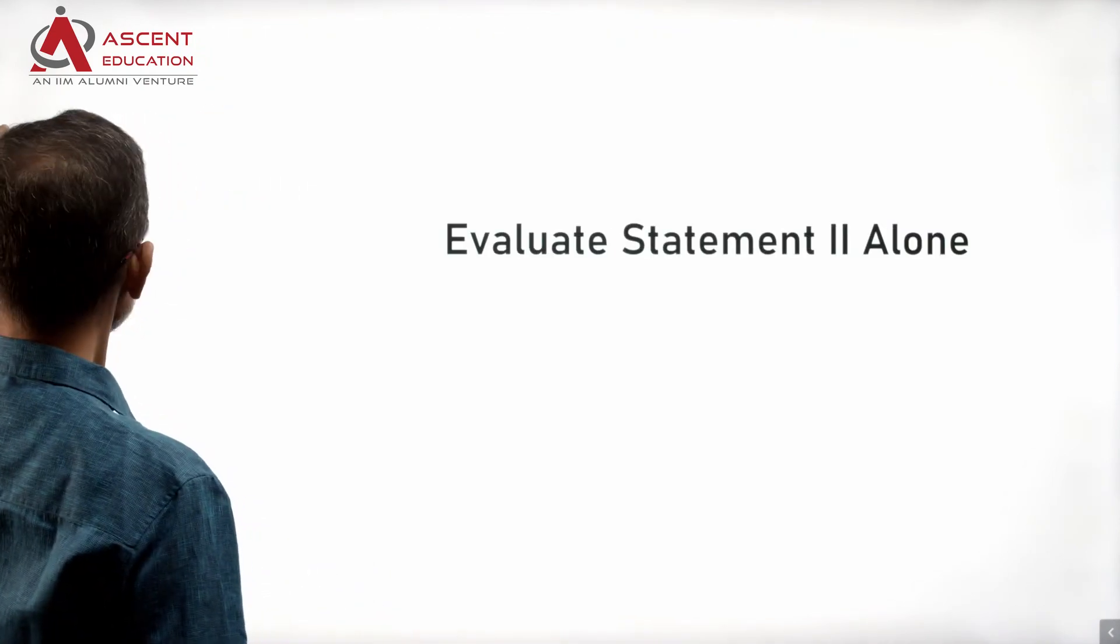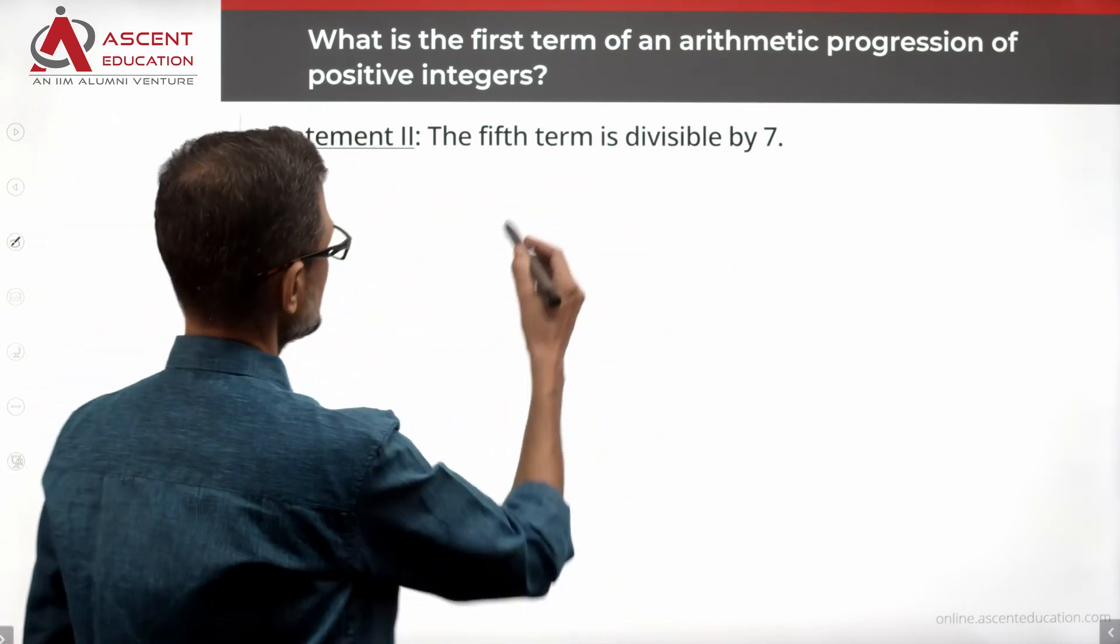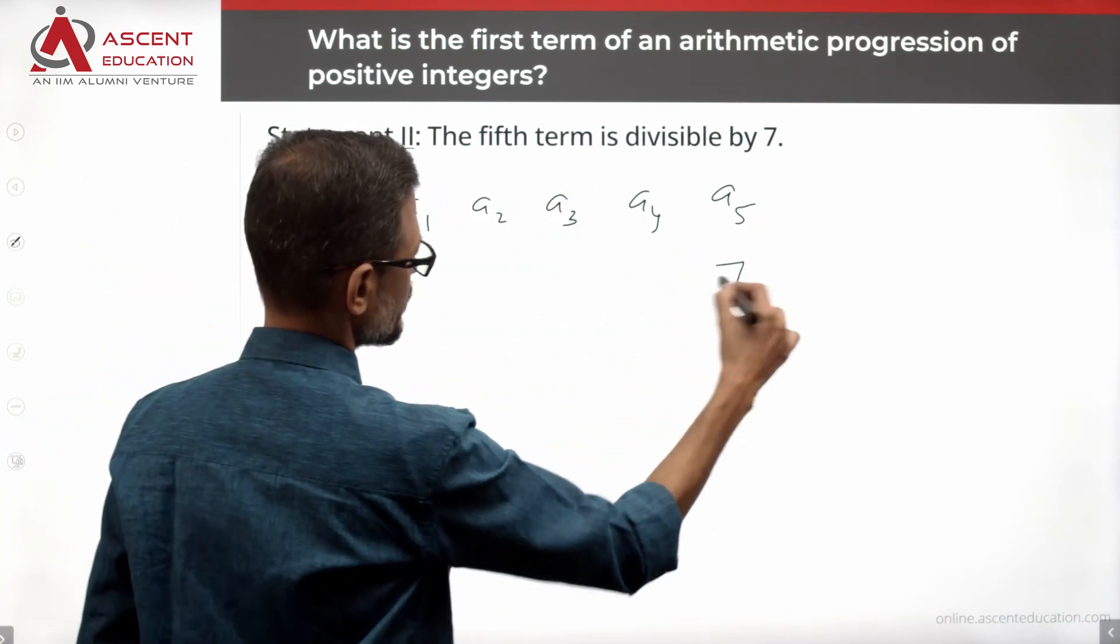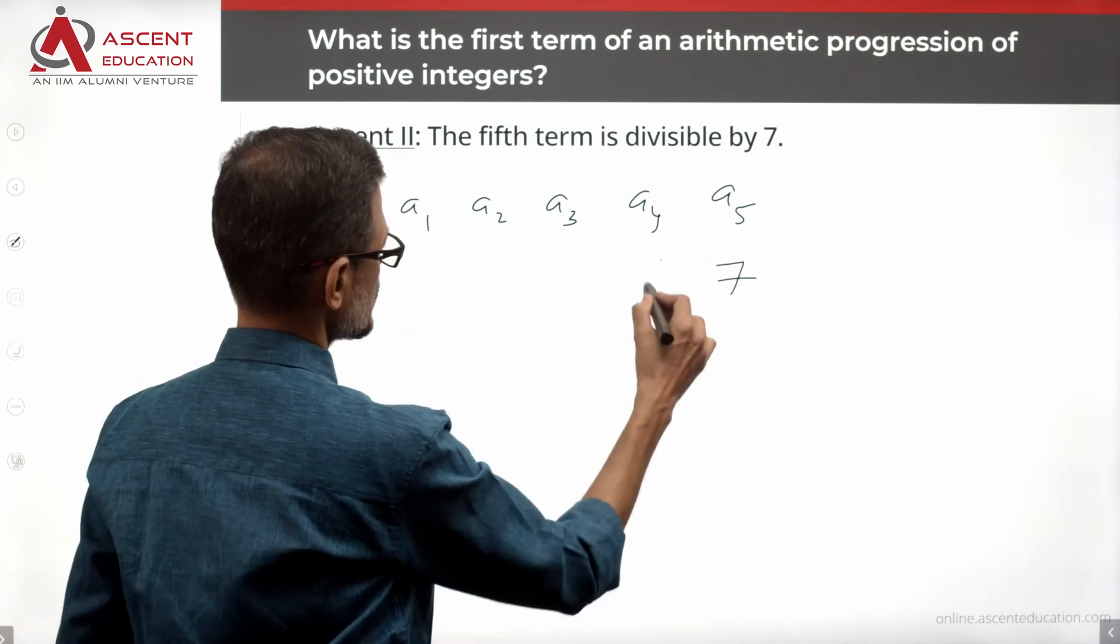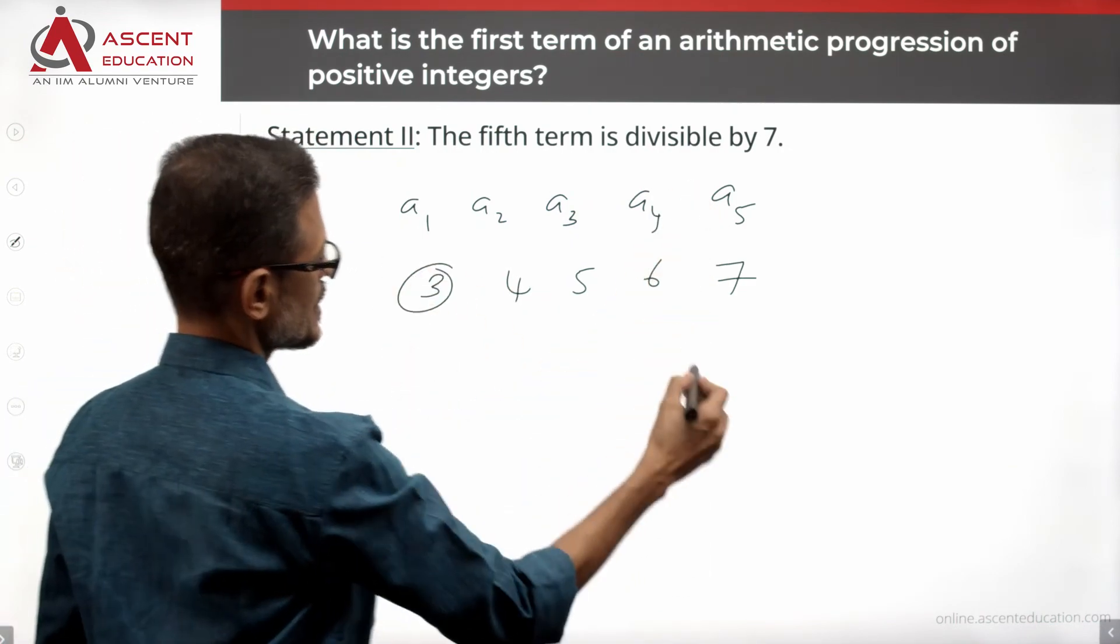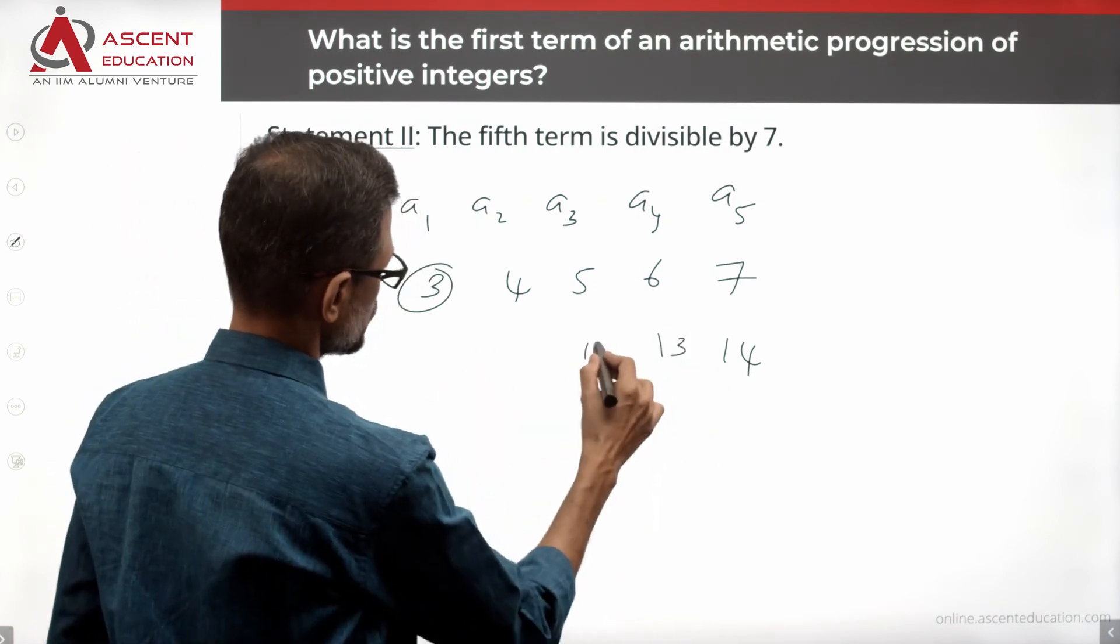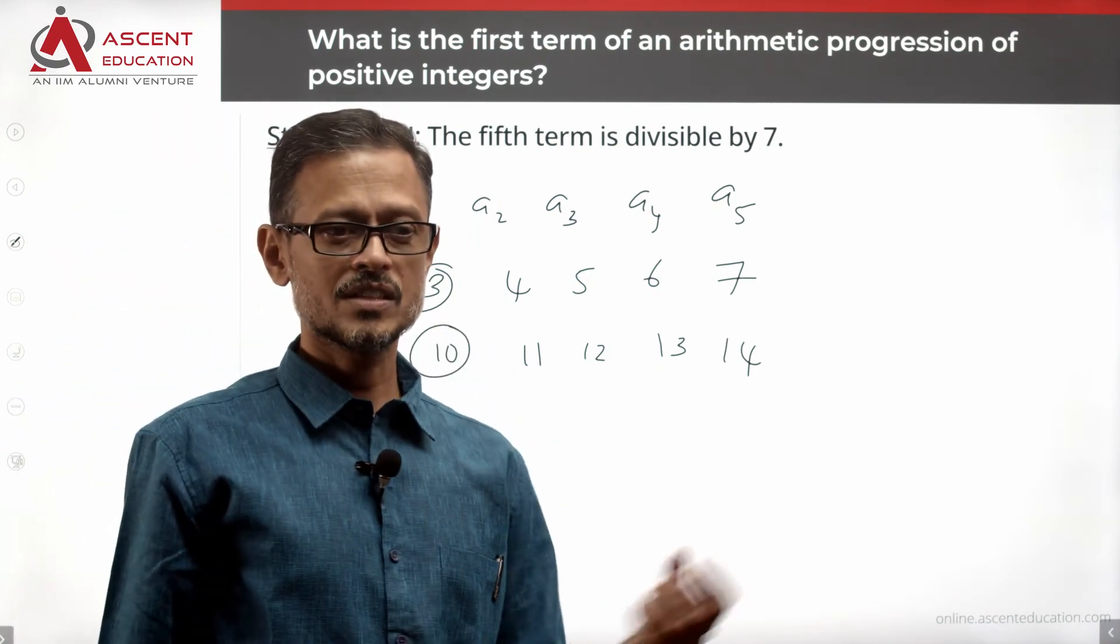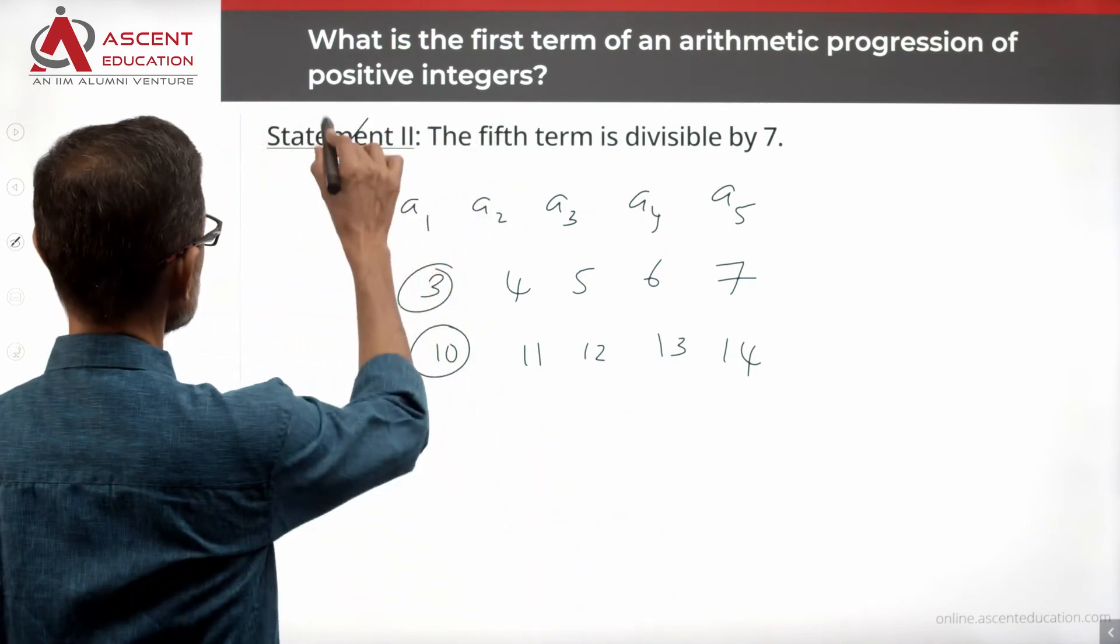Take a look at statement 2. The fifth term is divisible by 7. I am using counter example. It could be A5, A4, A3, A2, A1. I am writing one possibility. If this is 7, then it is divisible by 7. The common difference could be 1. So 6, 5, 4, 3. If the first term is 3. This could very well be 14. Common difference could again be the same, 1. So it's 13, 12, 11, 10. If the first term is 10, do we have a unique value for the first term with the information in statement 2? No. We can have infinite possibilities for it. So statement 2 alone is not sufficient. Statement 1 is sufficient.